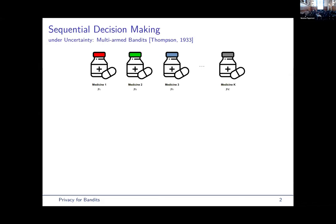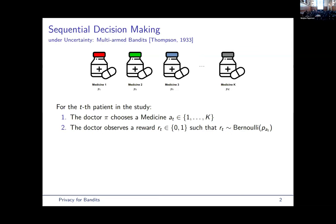So in a clinical trial, we have K candidate medicines, and we want to find the medicine that cures the most number of people. To do so, we design an interaction protocol.